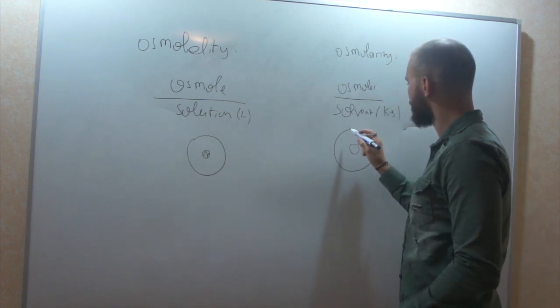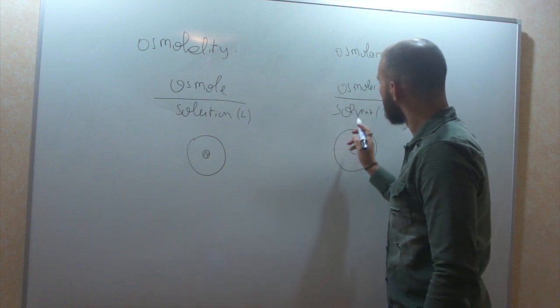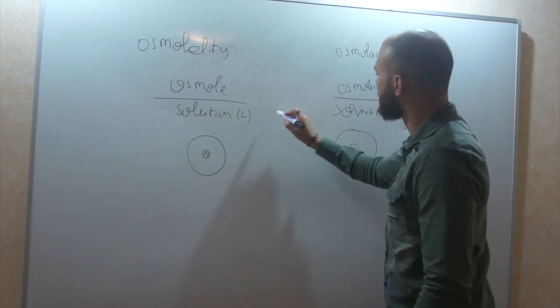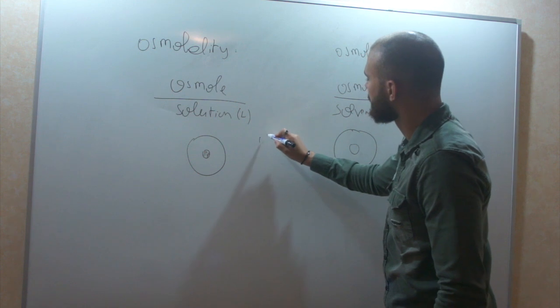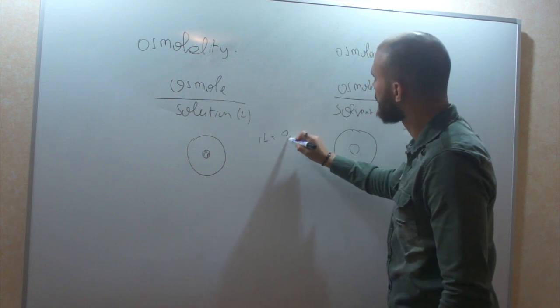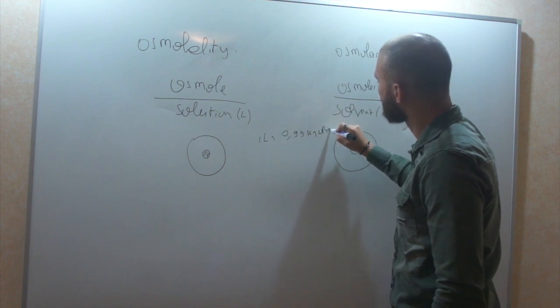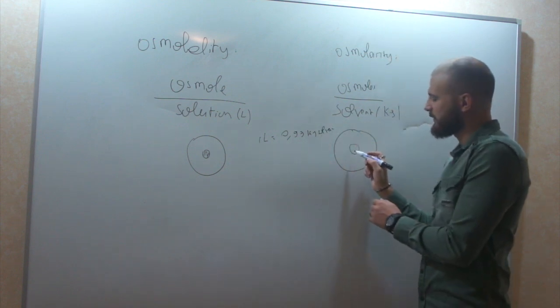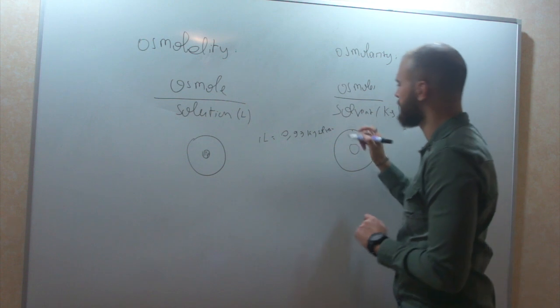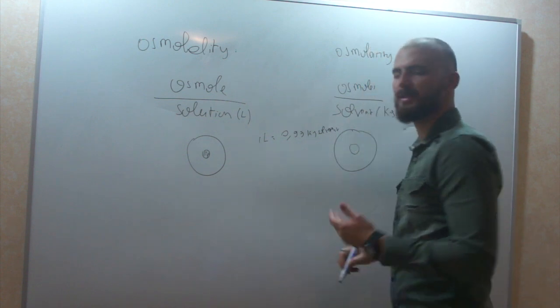Anyway, if you want. So, here, one liter of solution will have 0.99 kilogram of solvent. Because there is this little space that you take off. So, this is the difference.